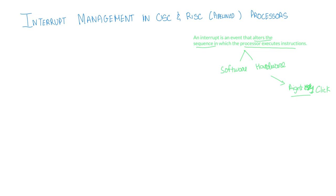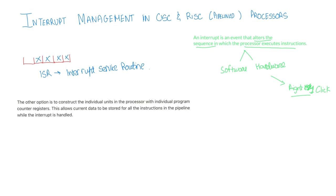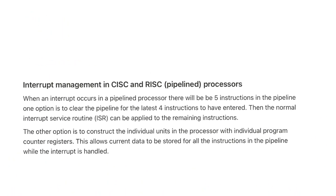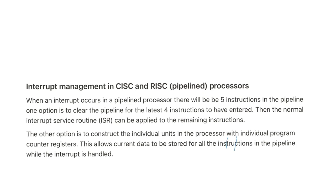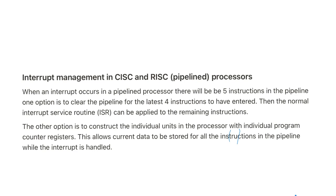Let's take for an example that an interrupt happens. There will be five instructions in the pipeline. One option is to clear the last four instructions in the pipeline and then the normal interrupt service routine runs. The other option is to construct the individual units in the processor with individual program counter registers. Now this allows the current data to be stored for all the instructions in the pipeline while the interrupt is handled. That's basically it. From our notes, if you want to read, this is a better explanation that could be written down as an answer as well. So obviously, they're in the notes and make sure to check the notes so you know what's going on.